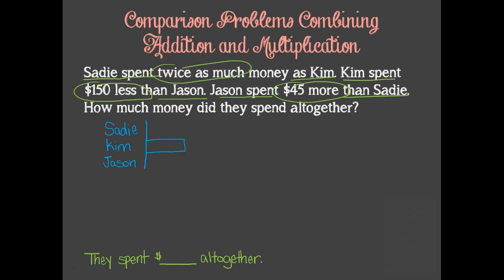Now that Kim has a unit bar, we can give Sadie two units since she spent twice as much money as Kim. We are also told that Jason spent $45 more than Sadie, so we can give him the same number of units that Sadie has, and then add 45 onto the end of that. Finally, we are told that Kim spent $150 less than Jason, which means that this section here equals $150. We are asked to find how much they spent altogether, so we can bracket the model and place our question mark at the end.